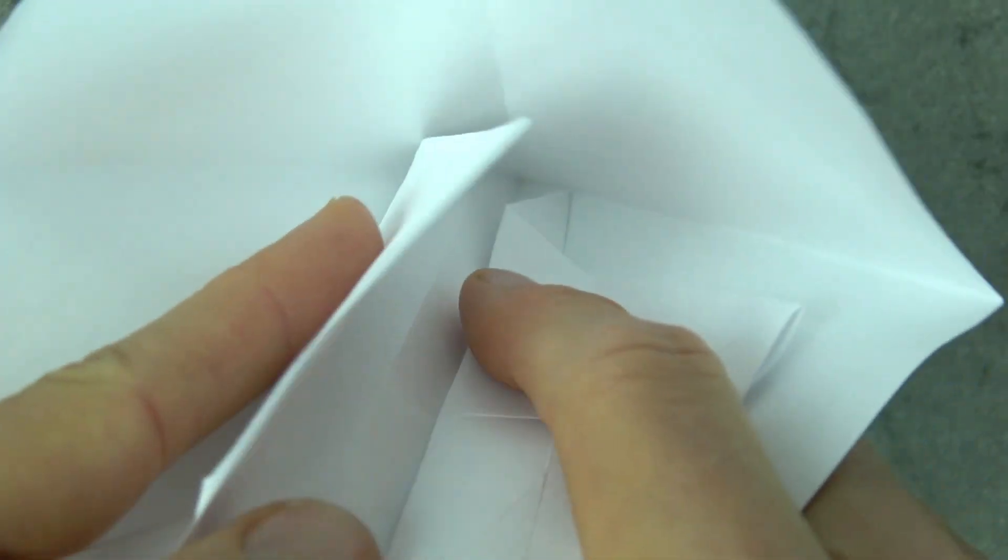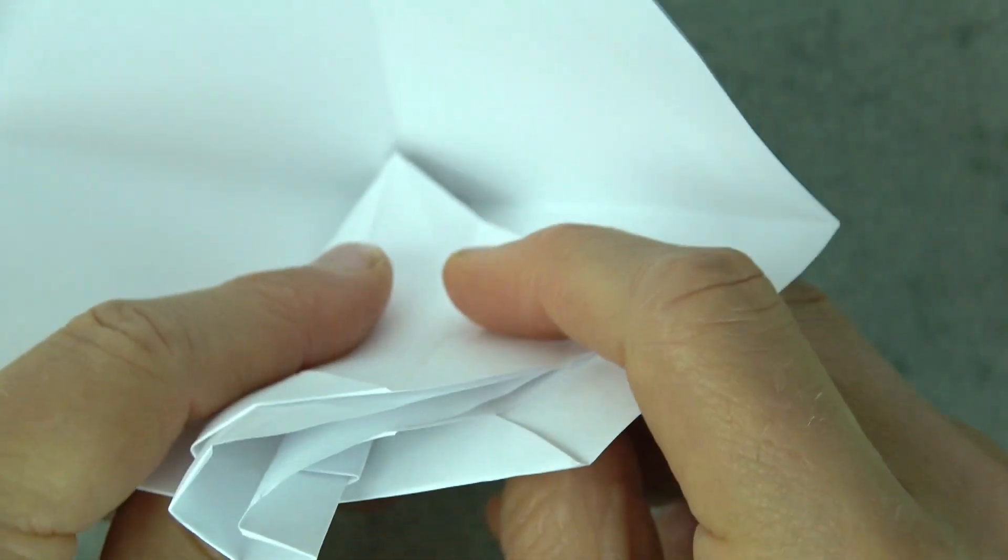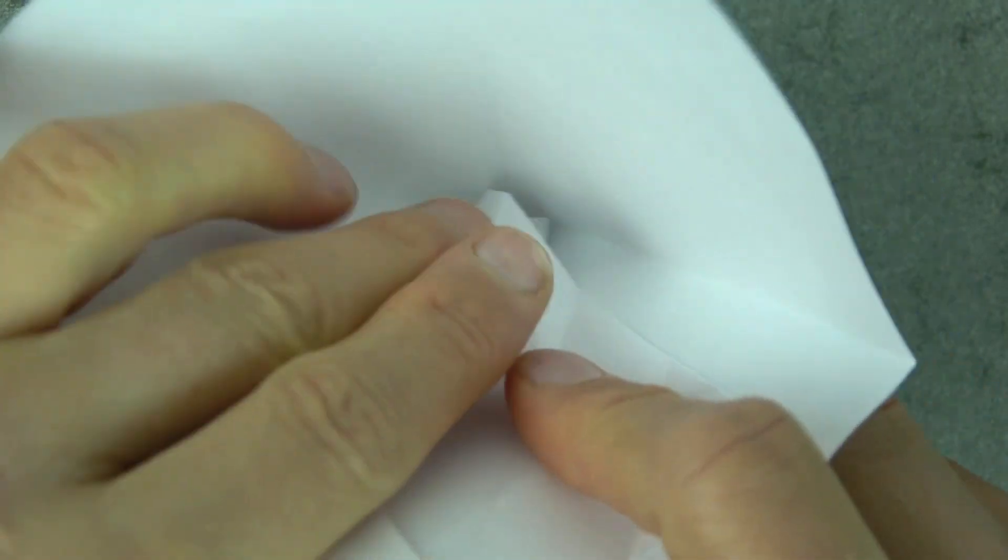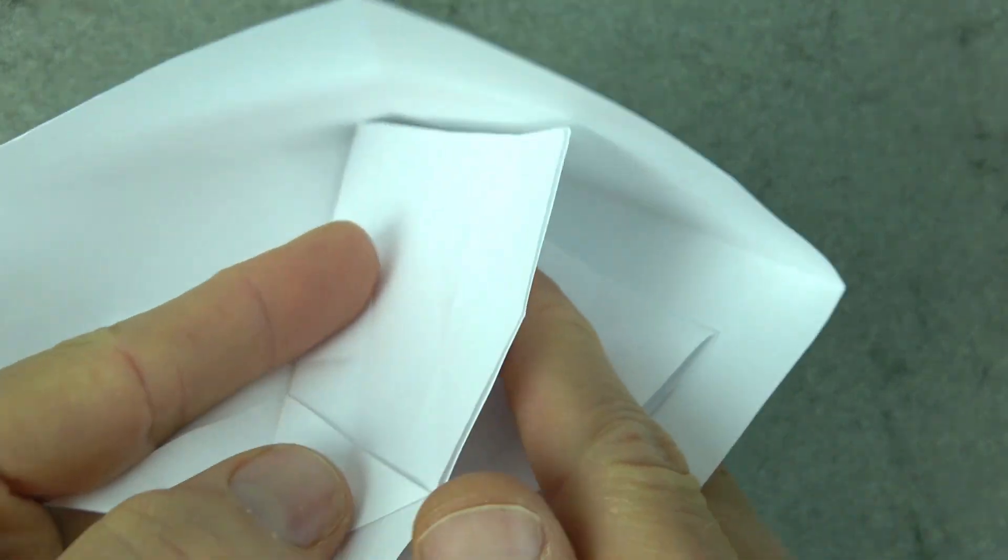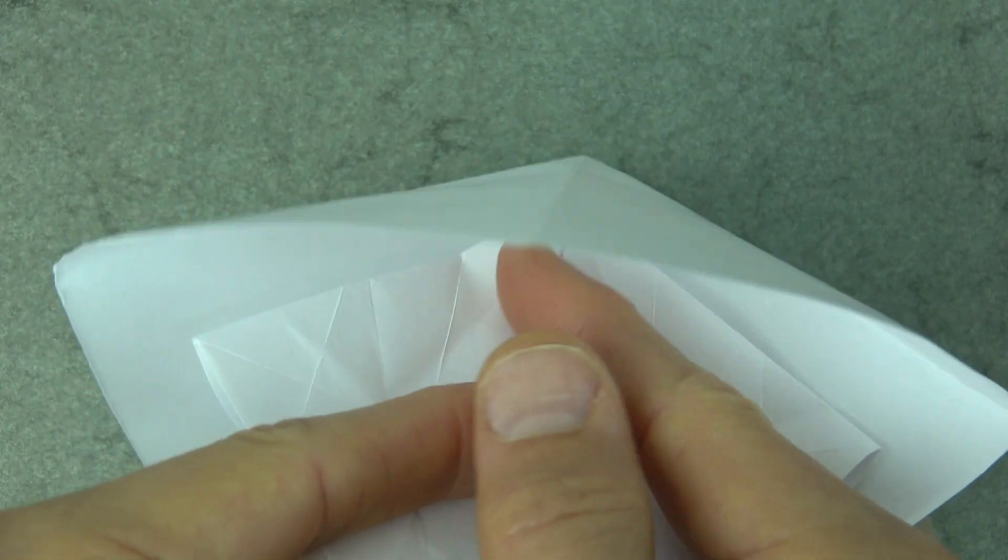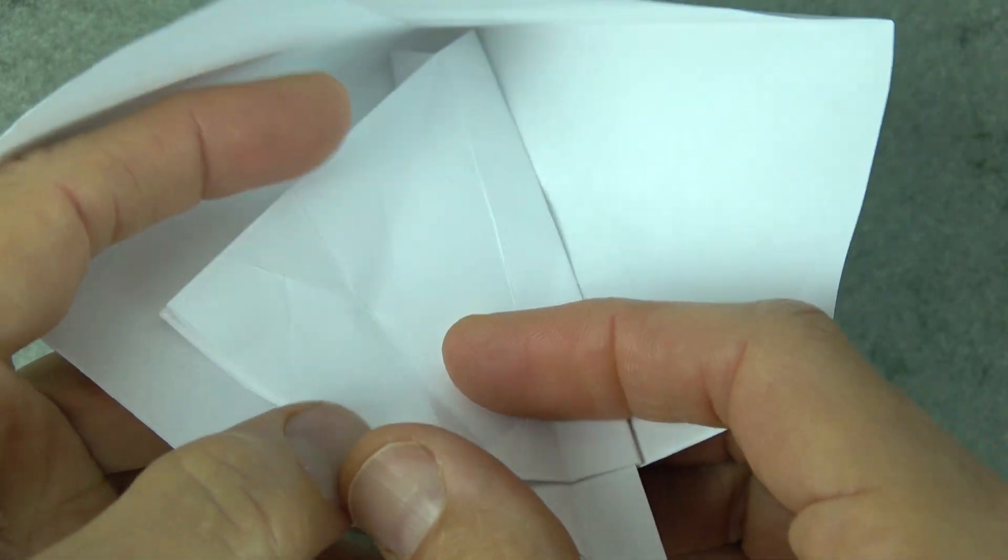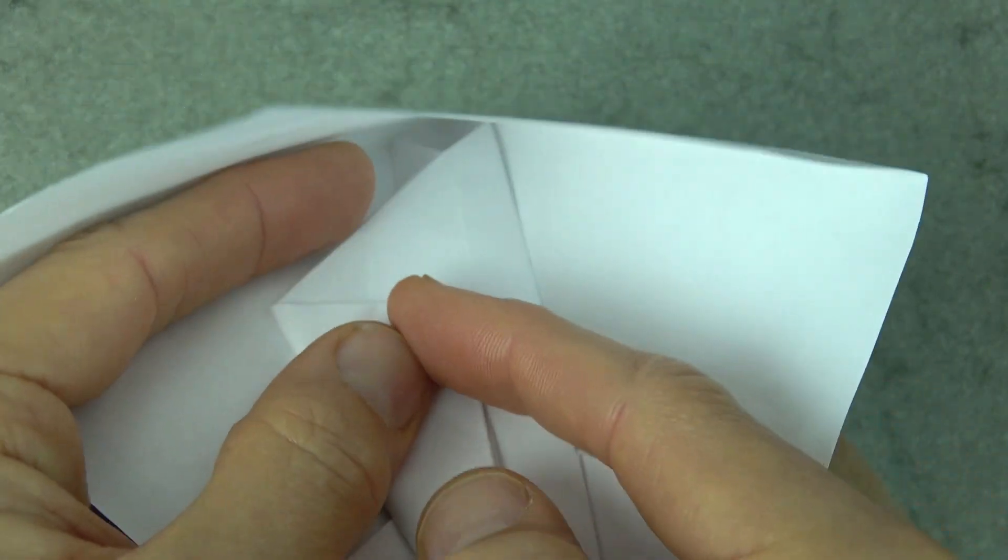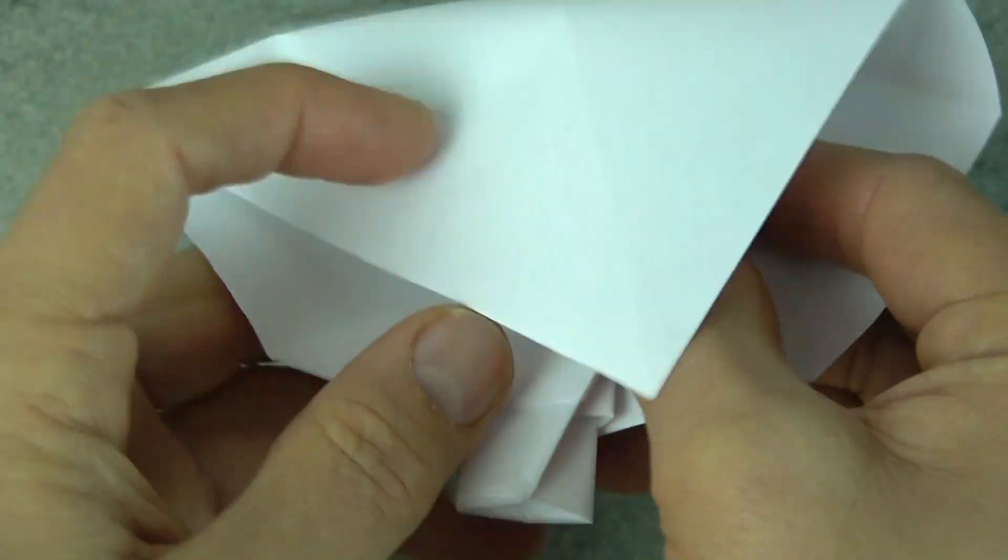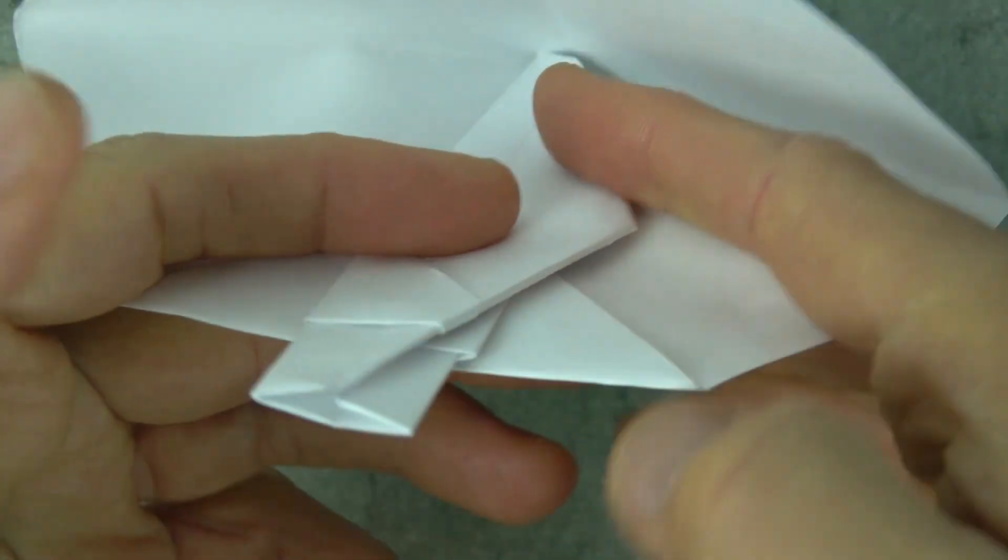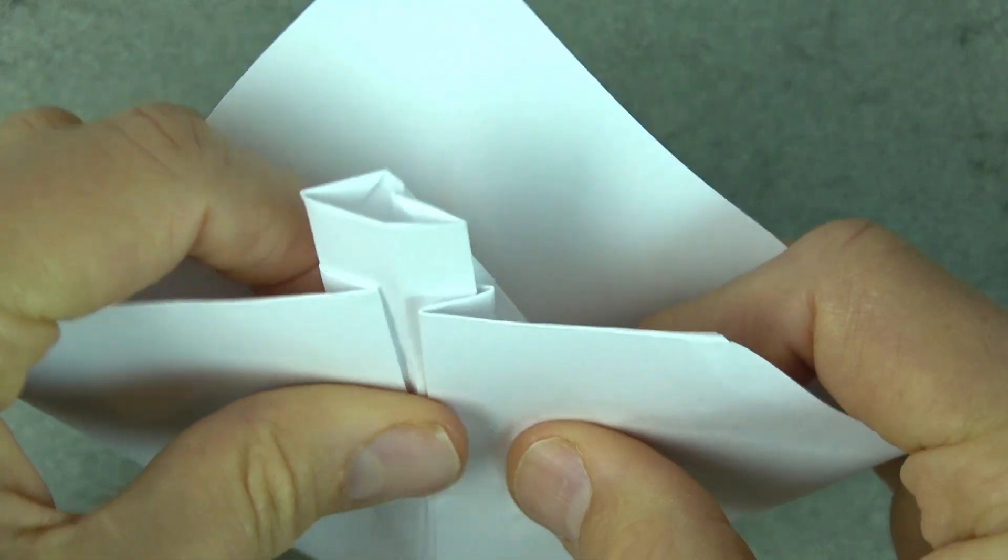And now fold this flap so that this corner touches this corner. And fold it back. And fold this flap over. And here we go. Fold this flap like this. And this flap like this. And fold this flap over.